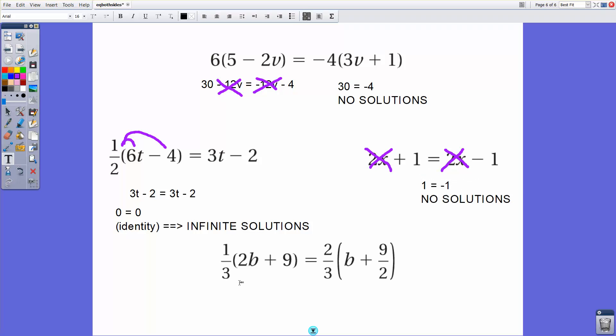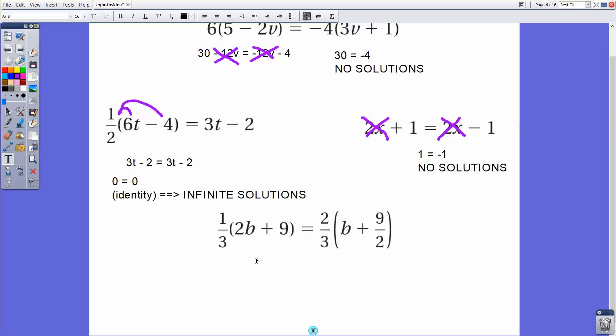How about over here? 1 3rd times 2b plus 9 equals 2 3rds of b plus 9 over 2. Don't let the fractions scare you. Remember, be comfortable with fractions. 1 3rd of 2 is 2 3rds. 2 3rds b. 1 3rd of 9 is 3. And if I distribute the 2 3rds on the right, that's 2 3rds of b again. So 2 3rds of b, I can see there's a commonality here.